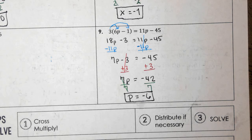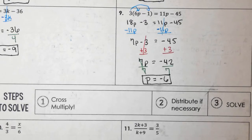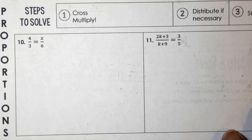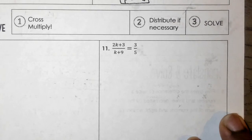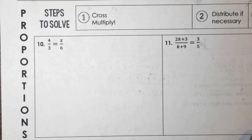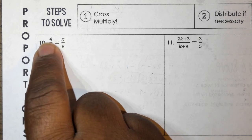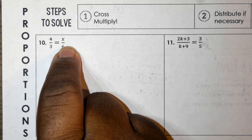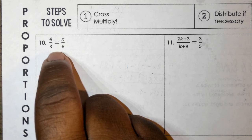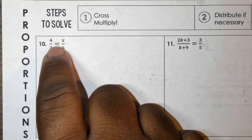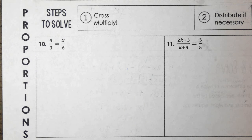Now let's look at proportions. The steps are: cross multiply, distribute if necessary after the cross multiplication, then solve. You can only cross multiply when you have a proportion — meaning a fraction equal to a fraction. If you see a fraction plus a fraction with no equal sign in between, do not cross multiply. You must have an equal sign between two fractions to cross multiply.